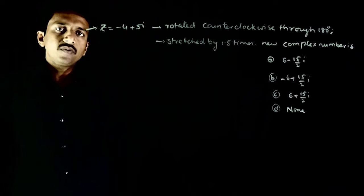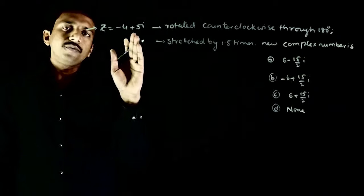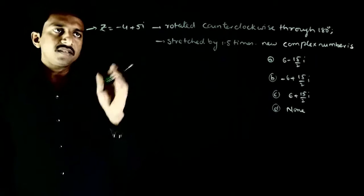Welcome students. This question is z is a complex number which is -4 + 5i and this vector, this complex number is rotated in counterclockwise direction through an angle of 180 degrees and then stretched by 1.5 times.